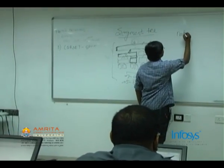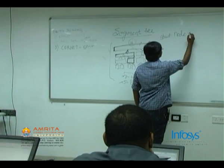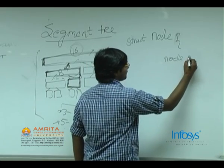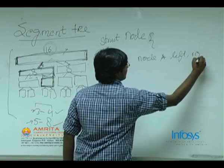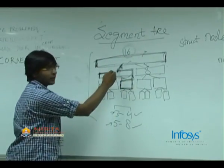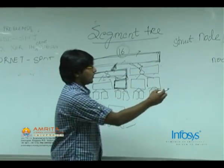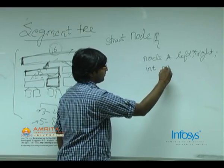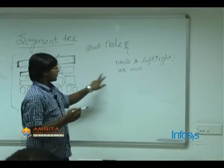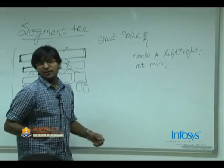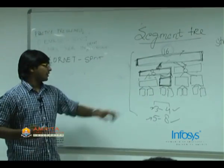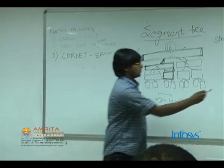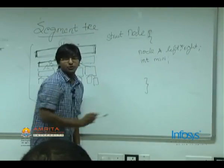Each node will have a node* left and a node* right — pointers to the left child and right child — plus any information you want to associate. Each interval will store the minimum for that particular range. This can be extended: the query could be for minimum, maximum, or the sum of elements in a range. You create a node structure accordingly. To construct it, write a function make_tree.